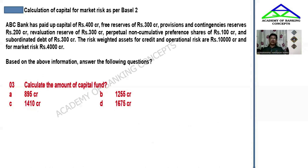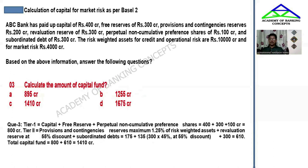Next, calculate the capital fund. Capital fund equals Tier 1 capital plus Tier 2 capital. Adding the two together, the summation gives us the capital fund. The first question answer for capital fund comes to 800, and the second question answer — already accounting for the cap on Tier 2 — the capital fund is 610 crores.